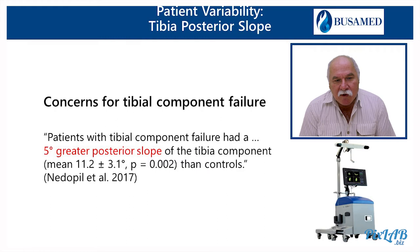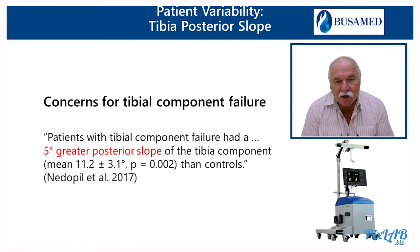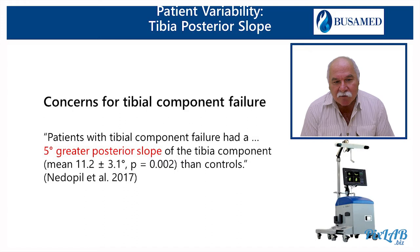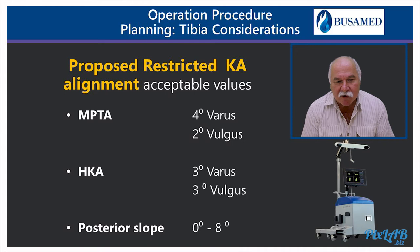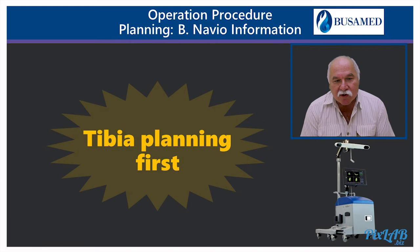On the medial side the lateral is a little bit less. As far as tibia component failure is concerned, Nedapol reported on kinematic alignment patients and the tibias that failed were those with a posterior slope 5 degrees greater than the controls. Interestingly, the mean was 11 degrees — so they were not placed at 90 degrees but actually at 11 degrees. Our proposed values are therefore: MPTA between 4 and 2, hip-knee-ankle between 3 degrees varus and valgus, and posterior slope 0 to 8.